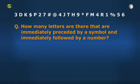Okay. Here it says, how many letters are there that are immediately preceded by a symbol and immediately followed by a number? Oh, this time I have to consider both the parameters—is preceded by and is followed by—simultaneously. But how? How should I solve this question?